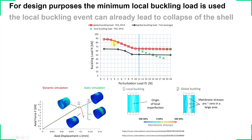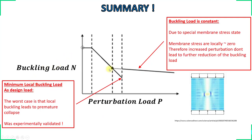In this area we have local buckling points and global buckling points. Dynamic simulations and tests showed that the local buckling event can already lead to complete collapse of the shell. This is an important design implication: for design we use the minimum local buckling load, and the buckling load is then constant due to the special membrane stress state.